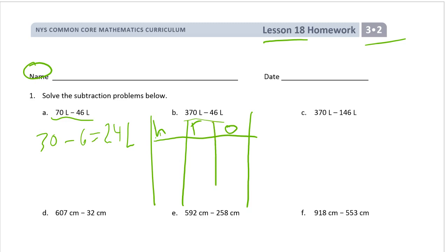It's going to be really hard. I'll use 370 just to show everybody what it looks like. You have a hundred here, but you need three hundreds. But really, you shouldn't be using this method — it's a lot more work.